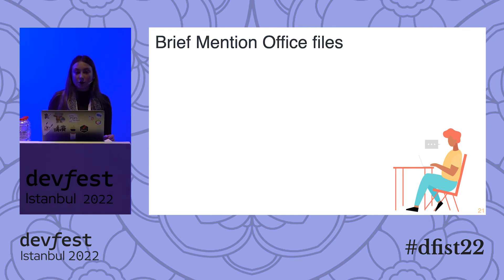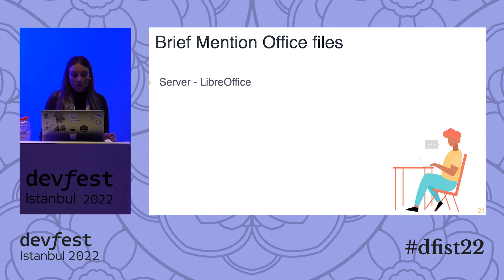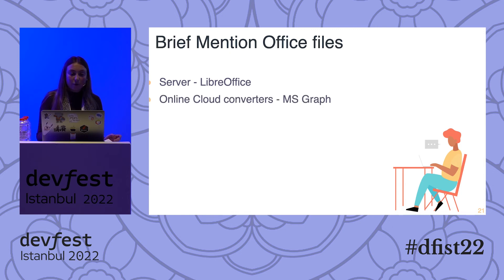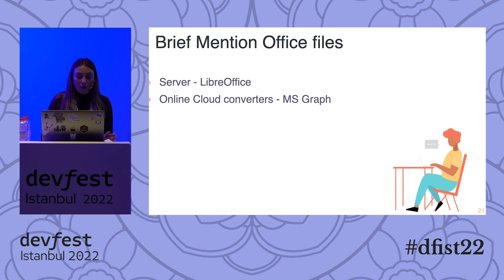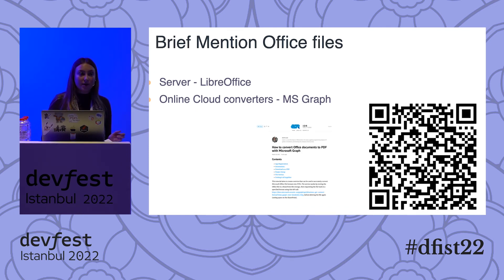Briefly on Office files — this is a really big topic. We have two suggestions: if you want to use it on a server, we recommend LibreOffice — it's free and open source, and runs nicely on Mac, Linux, and Windows. If you want an online cloud converter, we recommend Microsoft Graph. We have a nice blog article about this, so if you scan the QR code you can find more information. Likewise if you're a more visual learner, you can go to our YouTube channel — just search IDR Solutions — and we have a video that matches this.